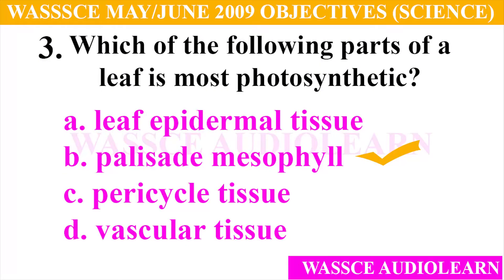Question 3: Which of the following parts of a leaf is most photosynthetic? A. Leaf epidermal tissue, B. Palisade mesophyll, C. Pericycle tissue. And the answer for number 3 is B, palisade mesophyll. The most photosynthetic part of the leaf is the palisade mesophyll.